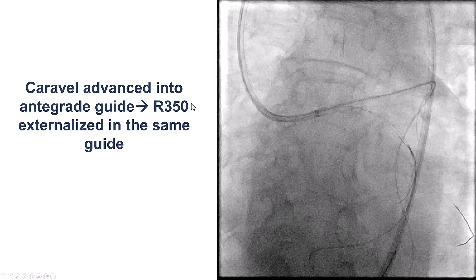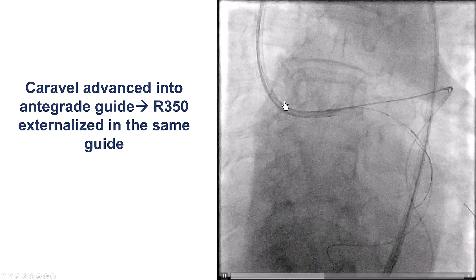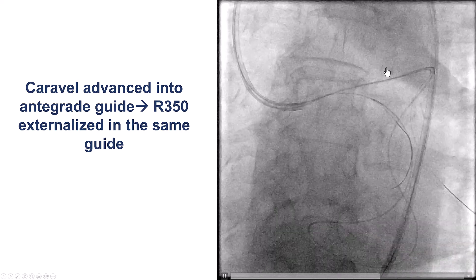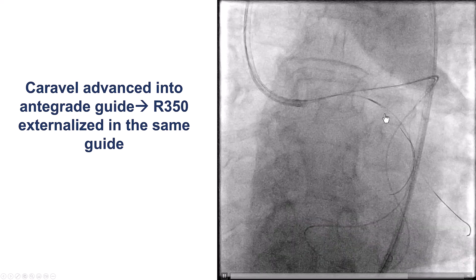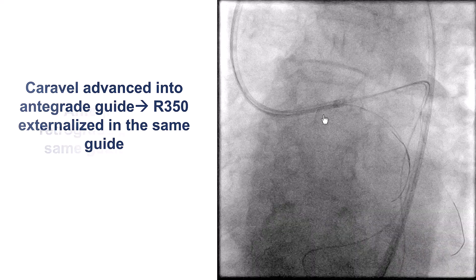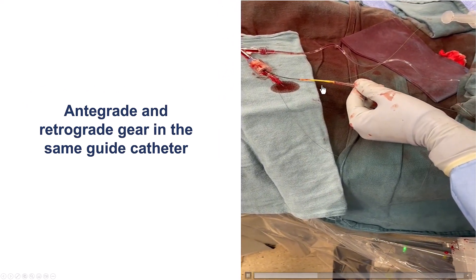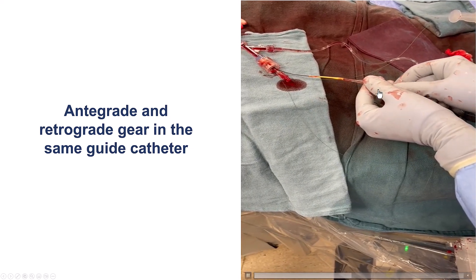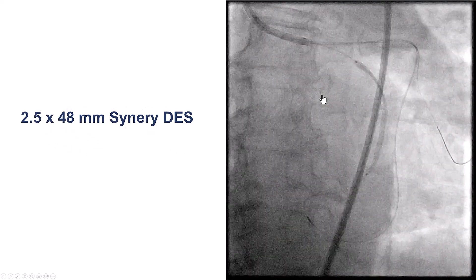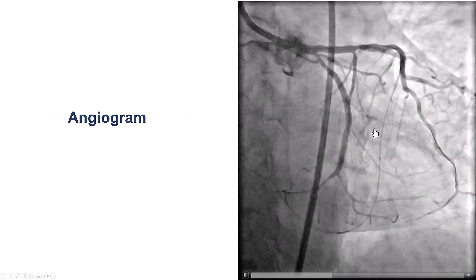We were able to advance the retrograde microcatheter into the antegrade guide catheter. The situation here was that everything was done through the same guide catheter — a single guide with the microcatheter going through the collateral and distal true lumen, then the wire and microcatheter coming back into the same guide catheter. We externalized the guide wire through the same guide catheter using the Caravelle, then predilated and stented with a long drug-eluting stent.